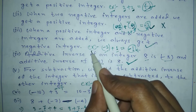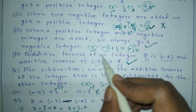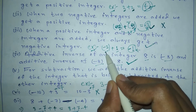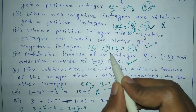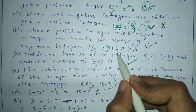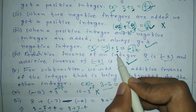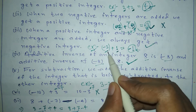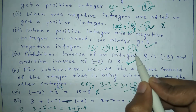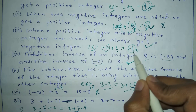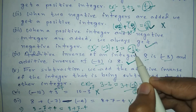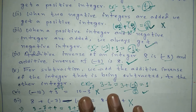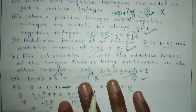The third point states: when a positive integer and a negative integer are added, we always get a negative integer. This point is correct. For example, minus 2 plus 1 gives us minus 1, which is a negative integer, so this point is correct.